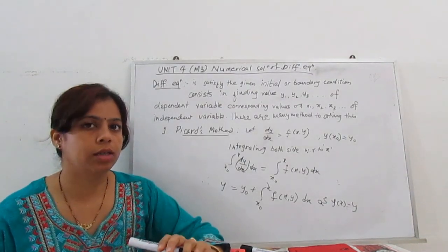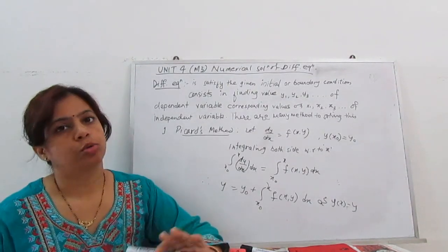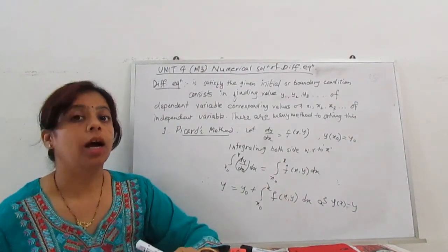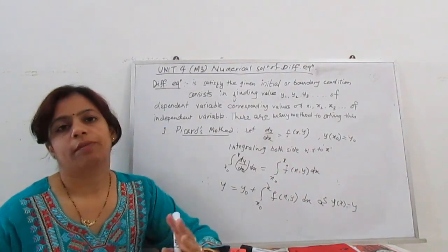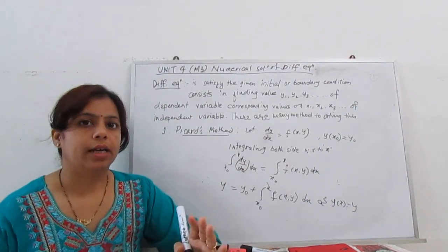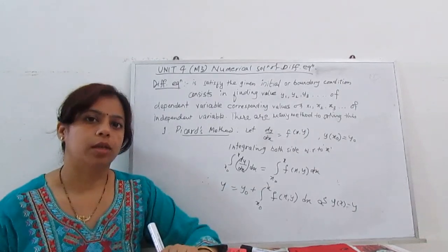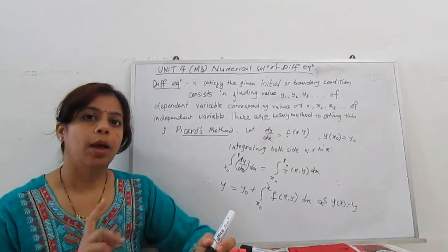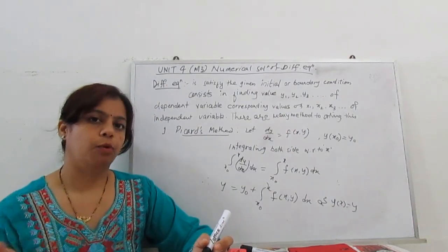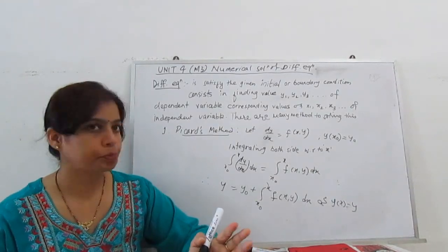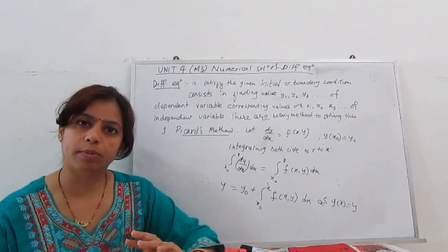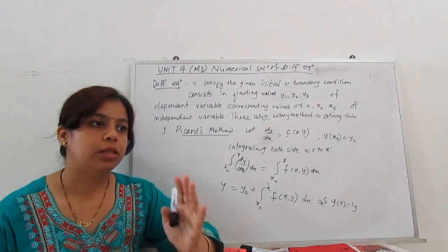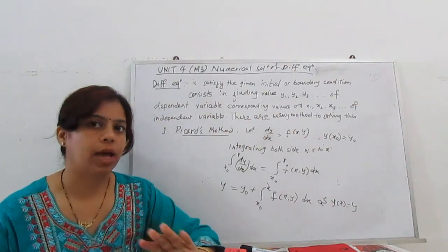Before this, we learned about interpolation and methods to solve interpolation. Now, what is a differential equation? An equation that contains a derivative is called a differential equation. In any equation there are two types of variables: dependent and independent. Dependent variable depends on the other variable; independent variable does not depend on another.